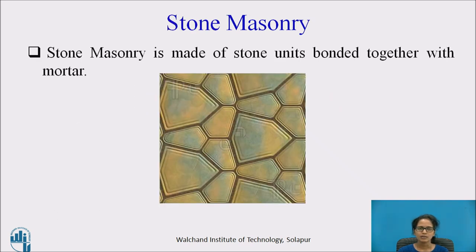Stone masonry: rock that is removed from its natural site, cut and dressed, and finally finished for building purposes is called stone. The construction of a building structure with stones as a constructional unit is called stone masonry. Here you can see that stone masonry is made up of stone units bonded together with mortar.